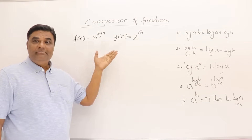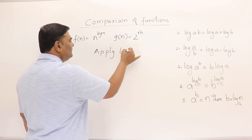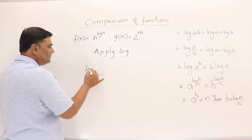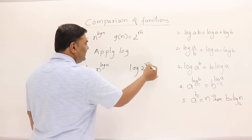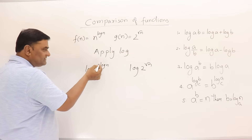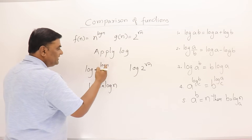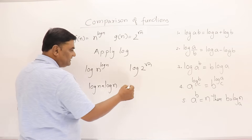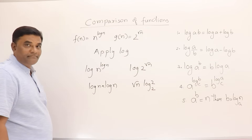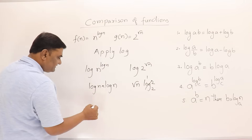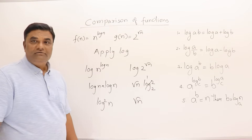To compare these two functions — n^(log n) and 2^(√n) — I will apply log on both sides. Using the power rule (third formula), log of n^(log n) becomes log n · log n, i.e., log² n. On the other side, the power comes out as √n · log 2 base 2, which equals √n since log₂2 = 1. So now we need to compare log² n and √n.